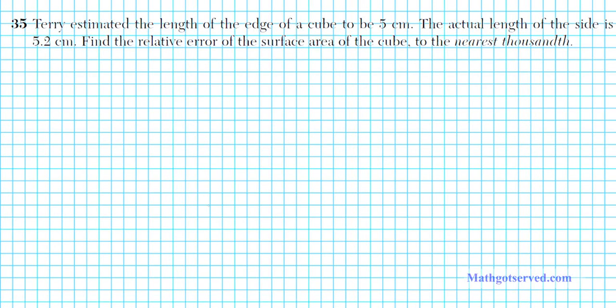Let's take a look at problem 35. Terry estimated the length of the edge of a cube to be 5 centimeters. The actual length of the side is 5.2 centimeters. Find the relative error of the surface area of the cube to the nearest thousandth.